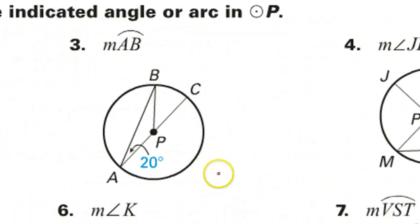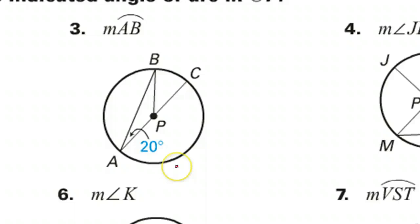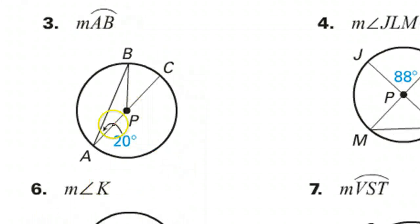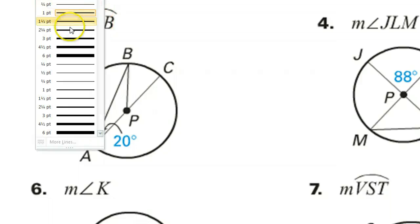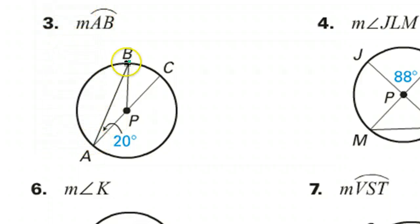All right, take a look at number three. Now, there's more than one way to do a lot of these problems, so don't worry if you see a different way. Now, we're supposed to find the measure of arc AB. Arc AB is this arc right here. That's what we're supposed to find the measure of.